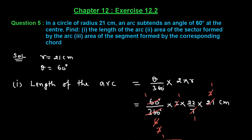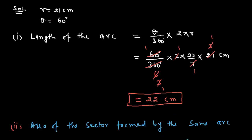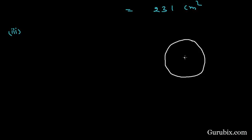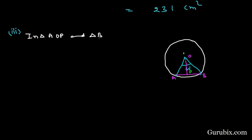Now we shall find the area of the segment formed by the corresponding chord. Let us draw a rough sketch using the information. Suppose this is the circle with center O, and this is the arc which subtends an angle of 60 degrees. This angle is 60 degrees. Now let us draw the chord AB, and draw a perpendicular from the center to chord AB. Suppose this perpendicular meets the chord at point P.